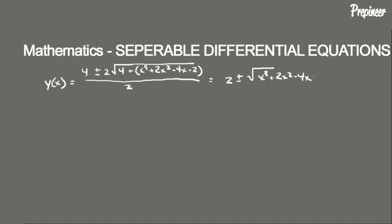Notice we have two solutions due to the plus or minus, but there is only a single explicit solution to this separable differential equation. To figure out which one is correct, we apply the initial condition — we plug x equal to 1 into the solution.